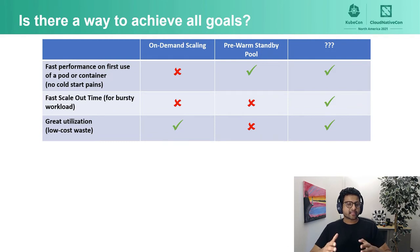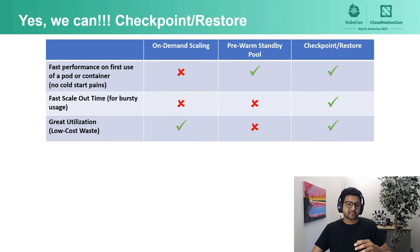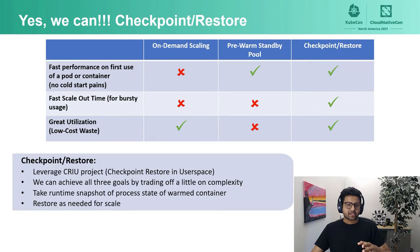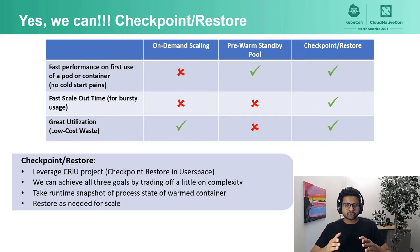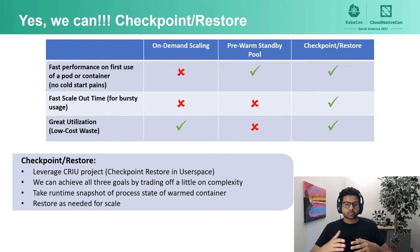Can we achieve these seemingly contradictory goals? Can we get around the cold start pains to provide fast performance on first use, with the ability to scale out fast to account for unexpected traffic spikes, along with maintaining low utilization waste? Yes, we can — and the answer is Checkpoint Restore. We used a Linux utility called CRIU, which stands for Checkpoint Restore in Userspace, to perform Checkpoint Restore of the containerized application.